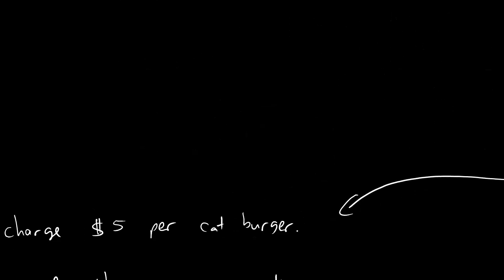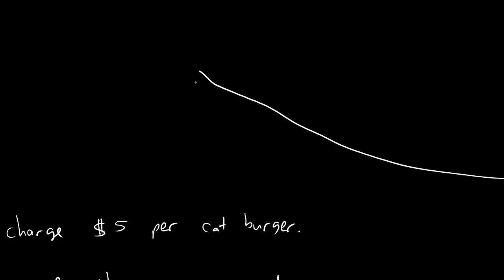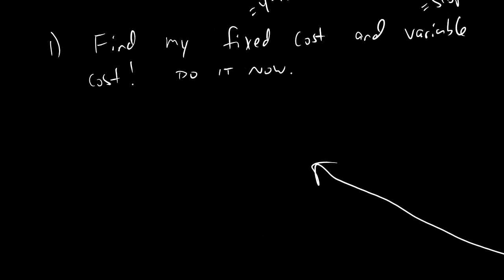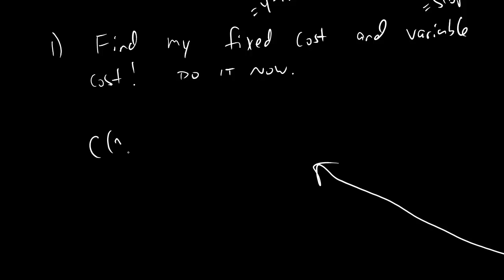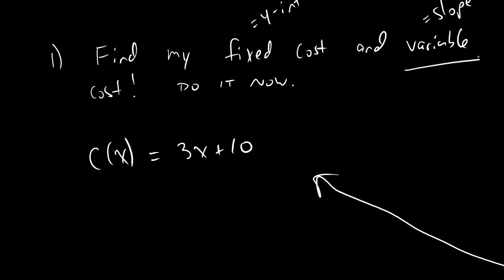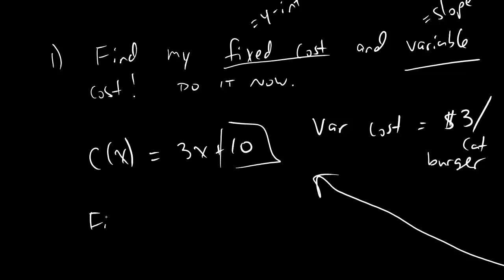So we've got y equals 3x plus 10 and I'm going to write that as c of x equals 3x plus 10. Just because we're talking about cost functions. So let's remember that. And then look at these little hints we wrote. Variable cost is the same thing as slope. So variable cost is $3 per catburger.